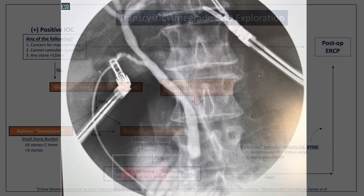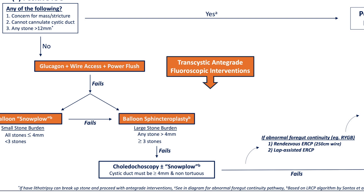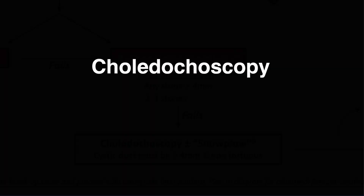However, if the stones remain present after a sphincteroplasty and power flush, you can do a snowplow maneuver as described previously as there should be no resistance at the sphincter. Or if you used a smaller balloon than the greatest diameter of the common bile duct, you can now try a bigger balloon, but take note that you may not see the waist sign this time. Or if that all fails, the final step is a choledocoscopy to snowplow with either the scope itself or a basket.